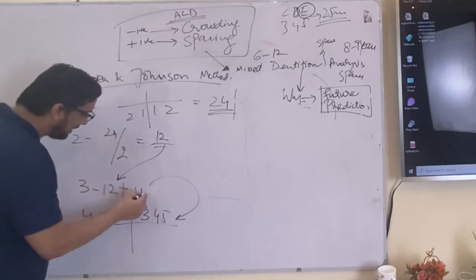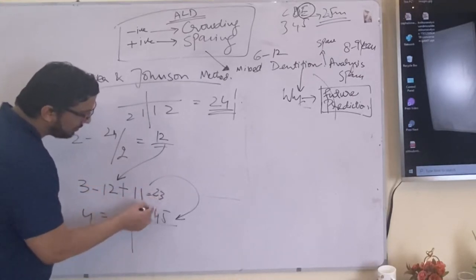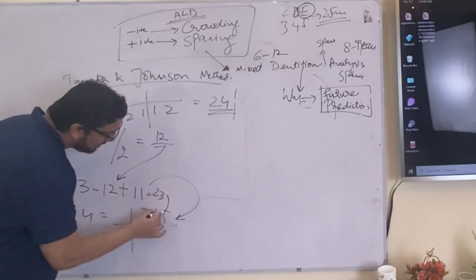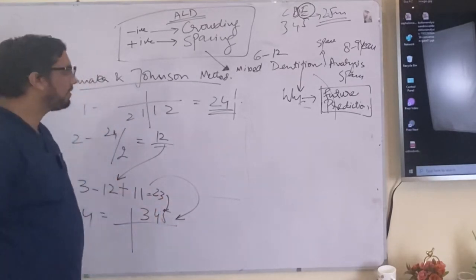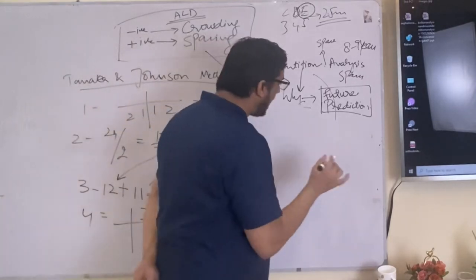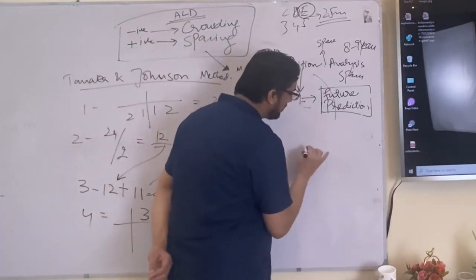What is the sum of 11 and 12? 23. So 23 is the mesiodistal width of 3, 4, 5. I am just giving you a clue: what is the average mesiodistal width of the first premolar? 7.